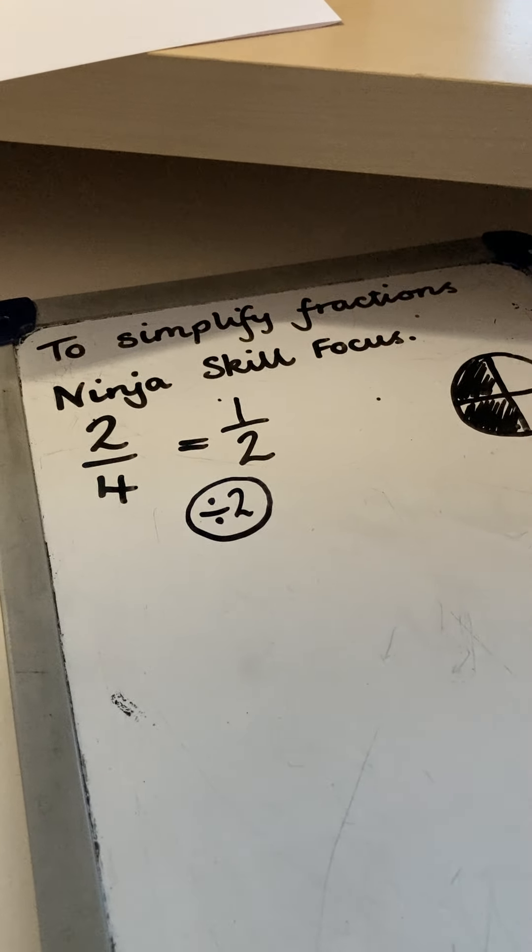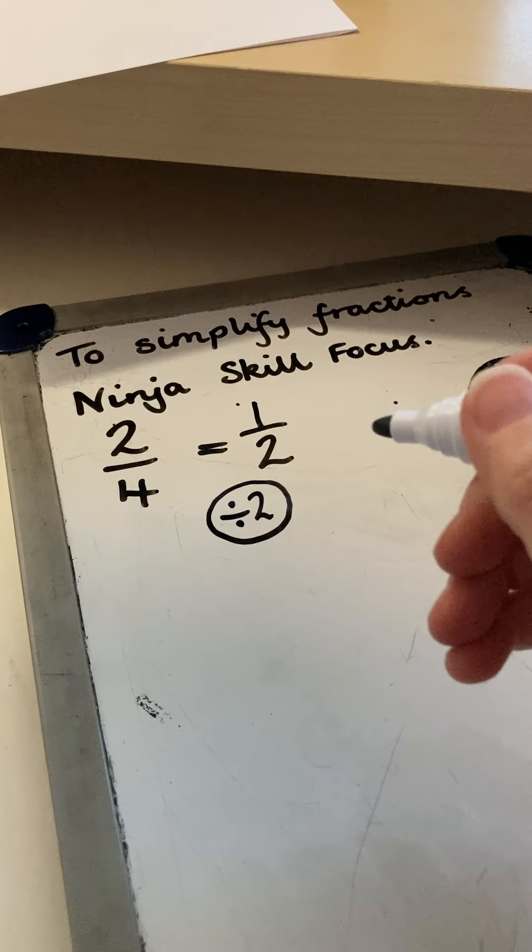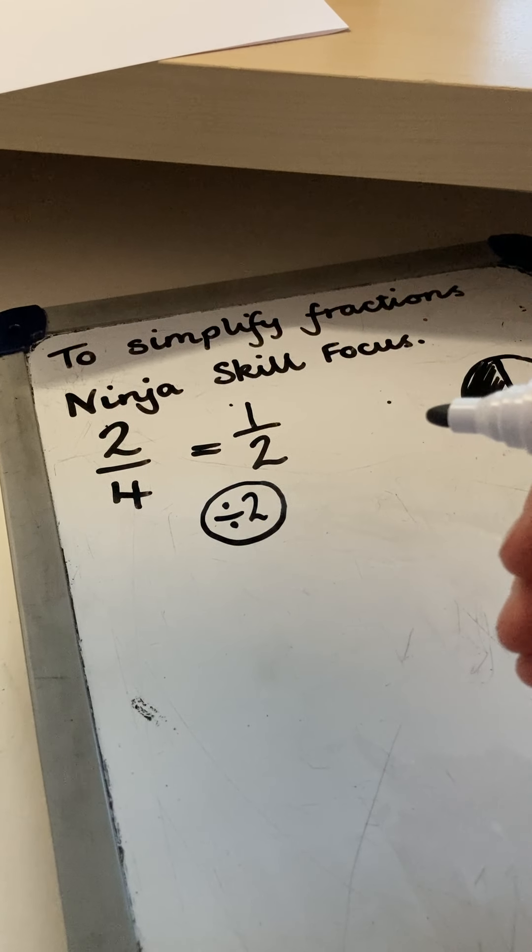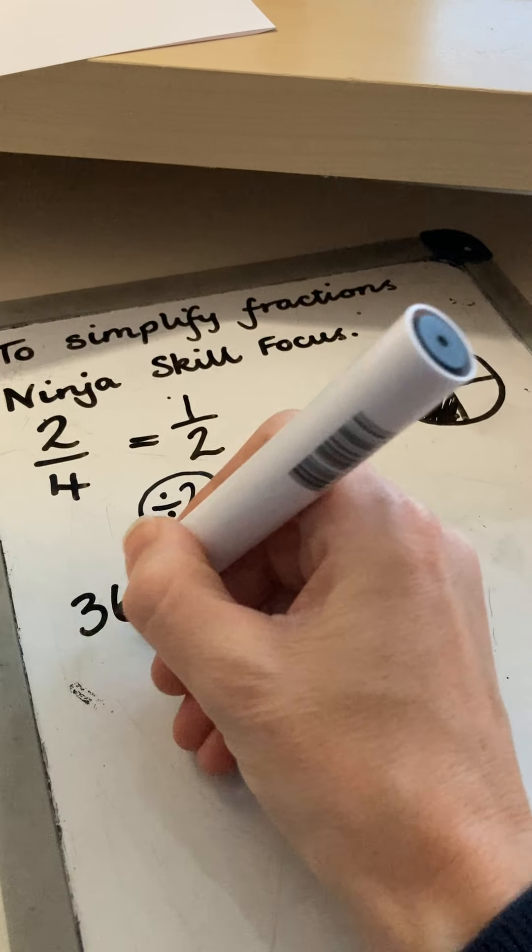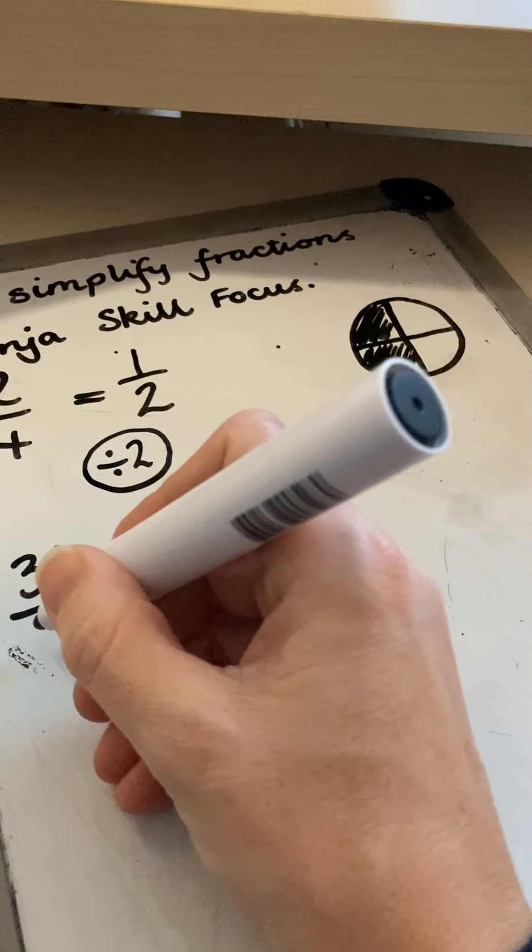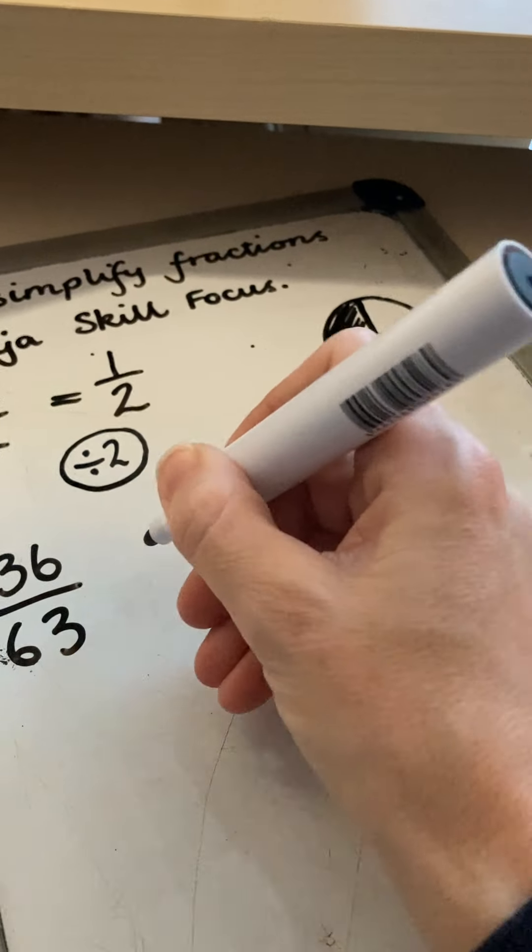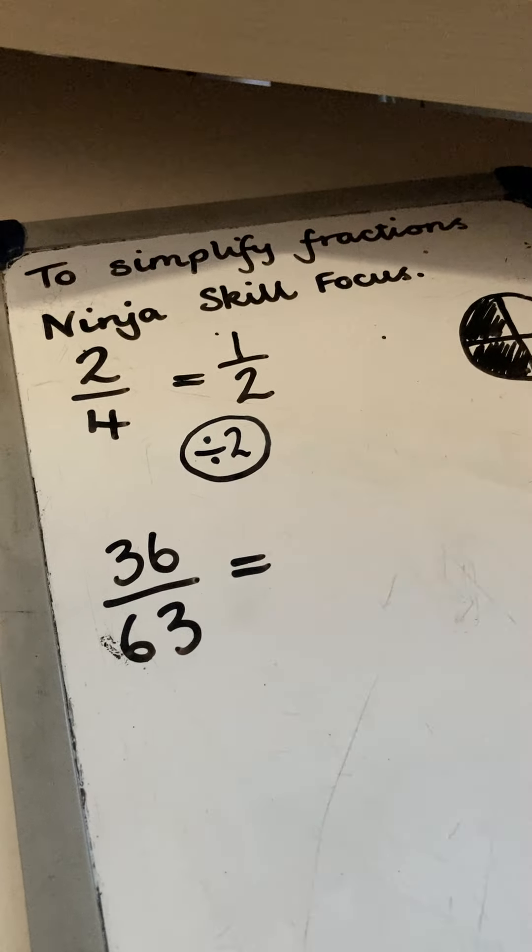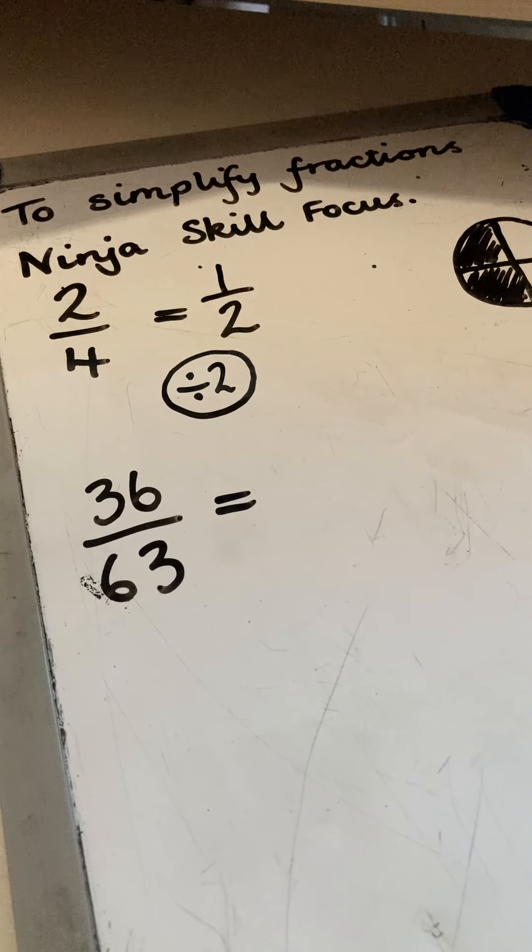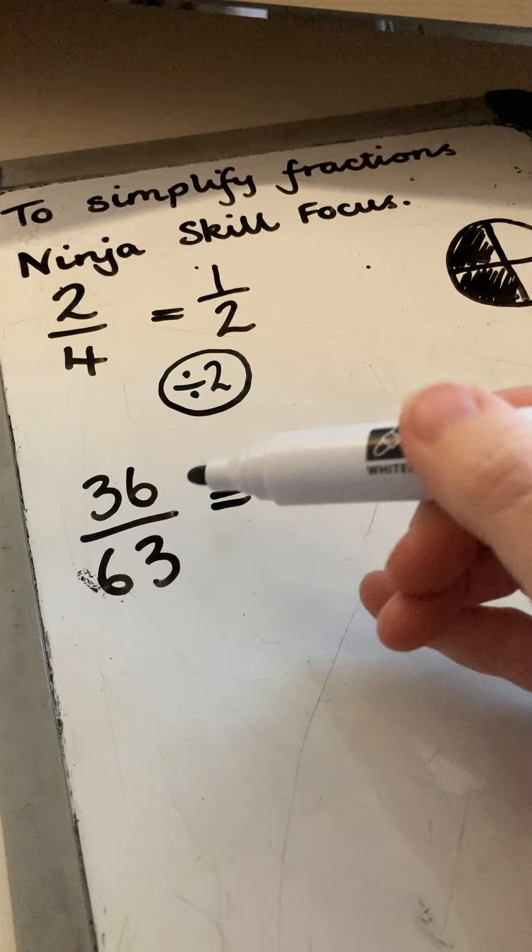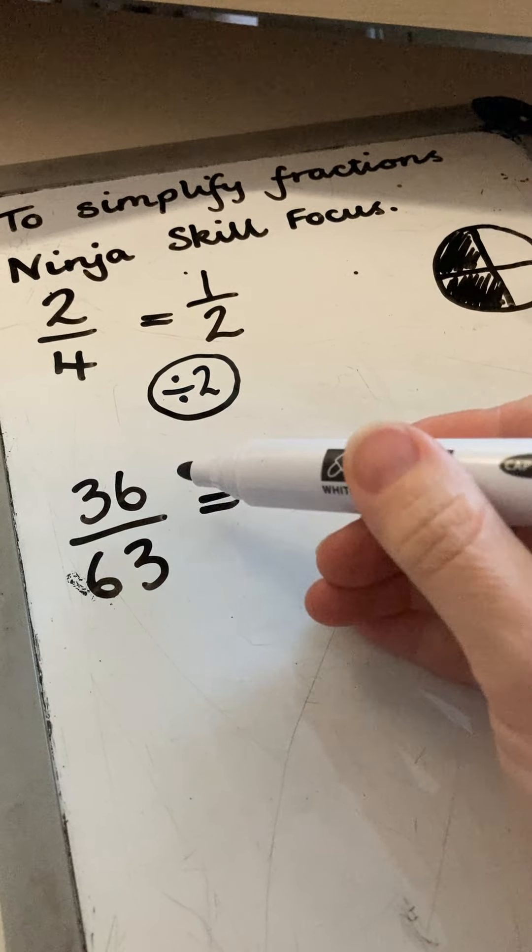The next question I'm going to look at is 36 divided by 63. Now, the bigger numbers on here, I know there's an odd number here, 63, so I can't half both of them.